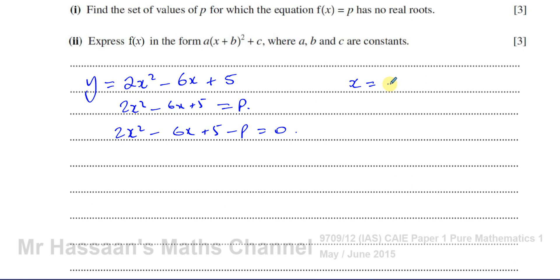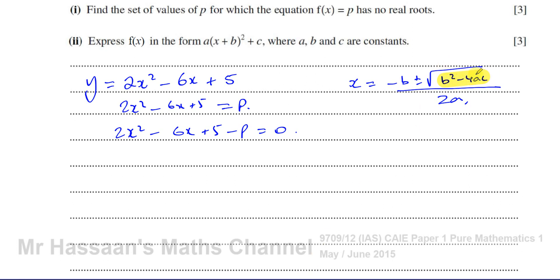When a quadratic equation has no real roots, the discriminant is negative. The discriminant is something which tells you how many roots a quadratic has. From the quadratic formula x = (−b ± √(b² − 4ac)) / 2a, the discriminant is the part underneath the square root sign: b² − 4ac.